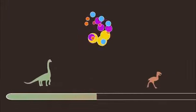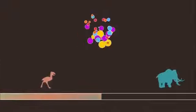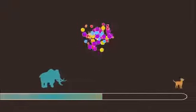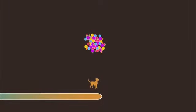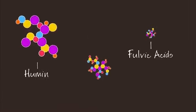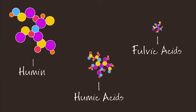Eventually, these compounds will break down into molecules that are very chemically stable and resistant to further decay. These complex molecules are known as humin, fulvic acids, and humic acids.